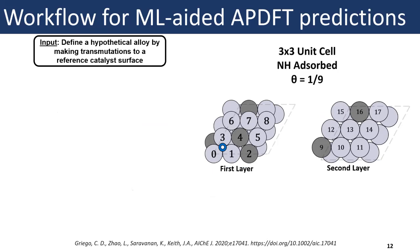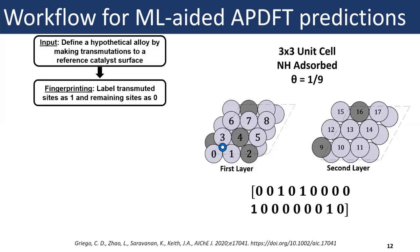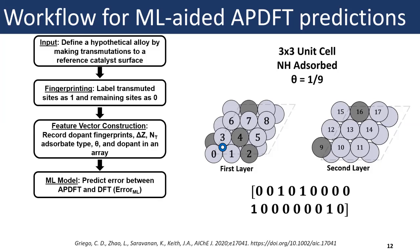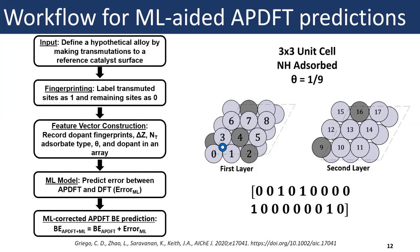Here I'll walk you through our workflow for machine learning corrected APDFT predictions. We start with an input — a hypothetical alloy made from transmutations to a reference surface catalyst, such as a three-by-three unit cell of NH adsorbed on a platinum alloy. We fingerprint these changes by assigning a one to any transmuted site and a zero to any that were not transmuted. We then record these fingerprints along with the ΔZ of the change, the number of changes, the adsorbate type, coverage, and other features. The model predicts the error between the APDFT binding energy prediction and the DFT prediction, and we apply this as a correction to obtain the corrected result.